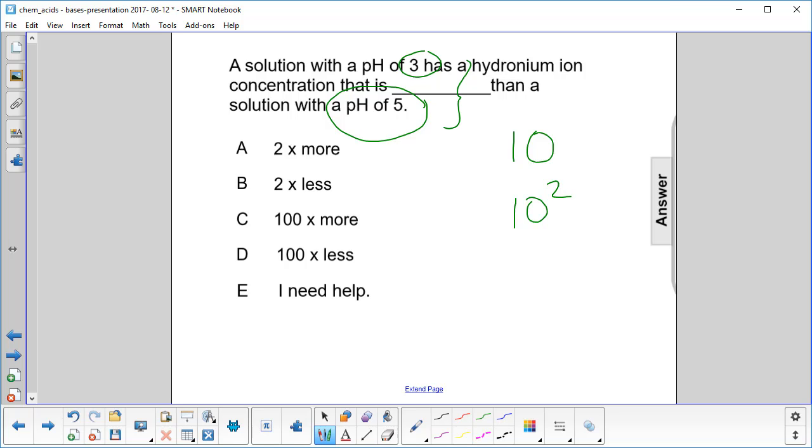Now we just have to figure if it's more or less. Well, we know 3 is more acidic than 5, so it must have a greater hydronium ion concentration. So we put those two facts together, 100 and greater than, and we come up with C.